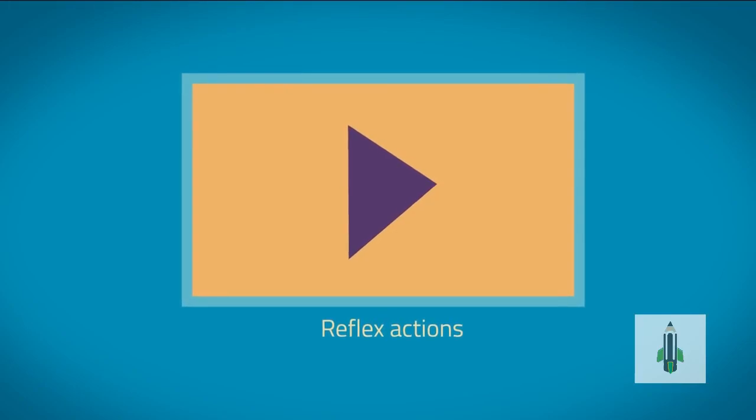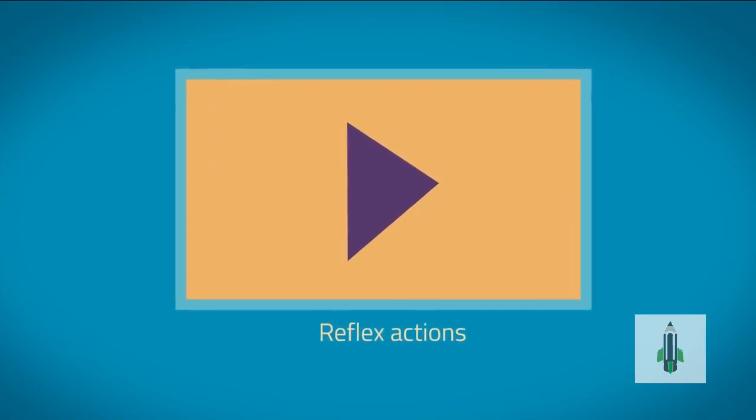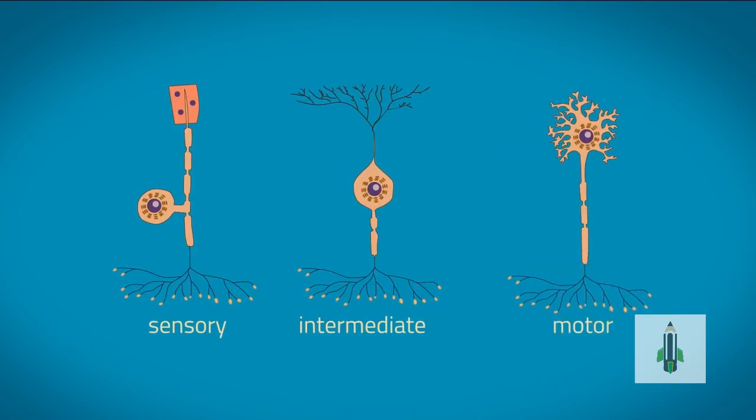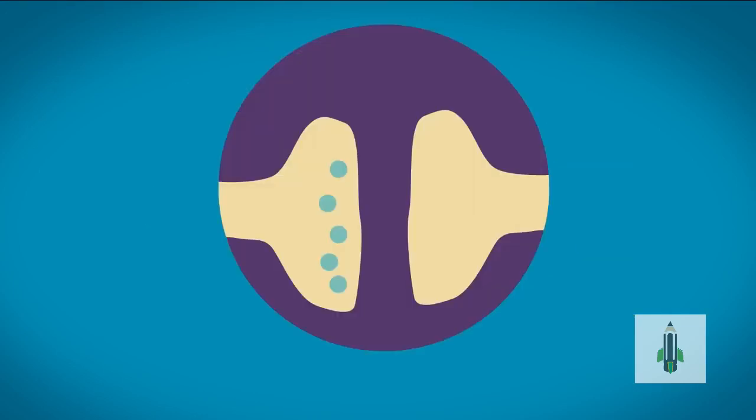So from this video, you should know that there are three different types of neurons or nerve cells: the sensory neuron which detects the signal, the relay or intermediate neuron, and the motor neurons which trigger the response. You should also know how synapses work, transmitting the impulse between neurons.